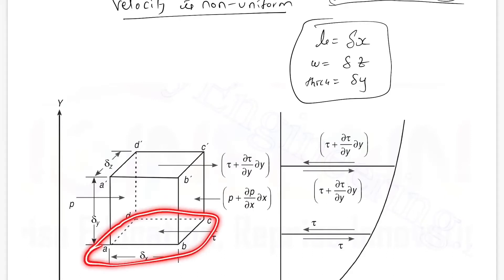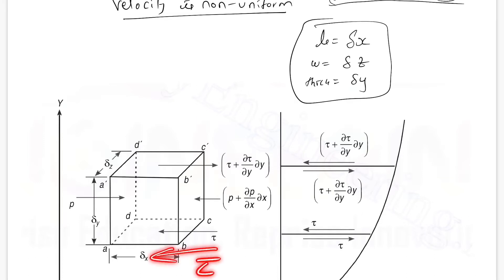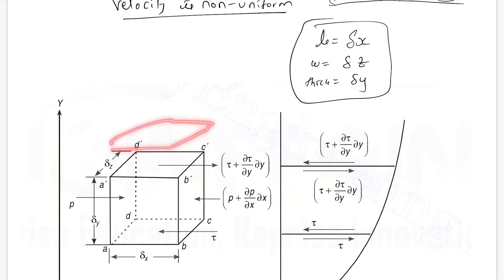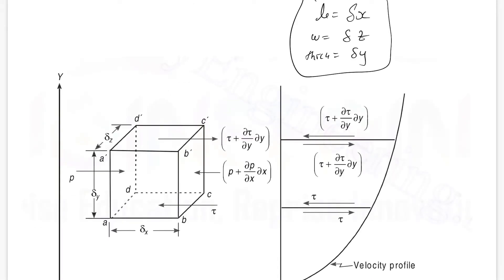Now consider the layers shown: A-B-C-D on the bottom and A'-B'-C'-D' on the top. This layer will accept some shear stress, and the top layer will also exert shear stress on it. There will be another layer above, so the shear stress on the top face is τ + (∂τ/∂y)·δy. The shear stress on the bottom face A-B-C-D is τ. Since there is a difference in shear stress values on the top and bottom layers, there will be a net shear force.